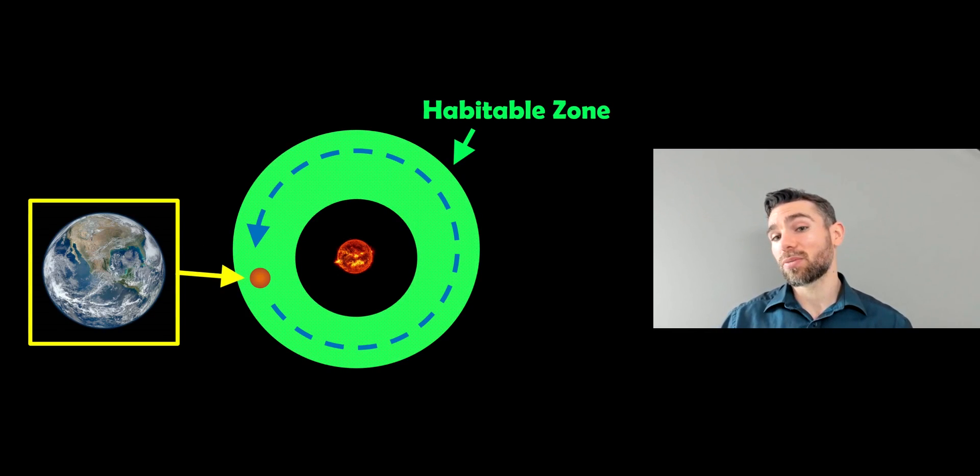And they have habitable zones. So if you've got a single star, there's always going to be a zone around it called the habitable zone, where it's going to be the right temperature to have liquid water on the surface of the planet. We're lucky we happen to reside in our habitable zone.